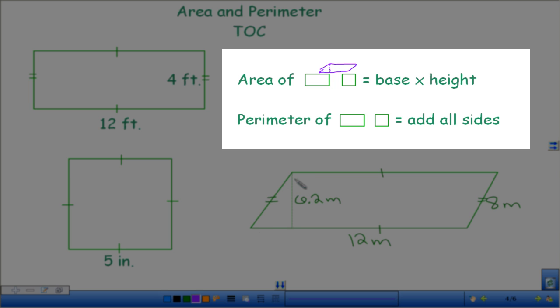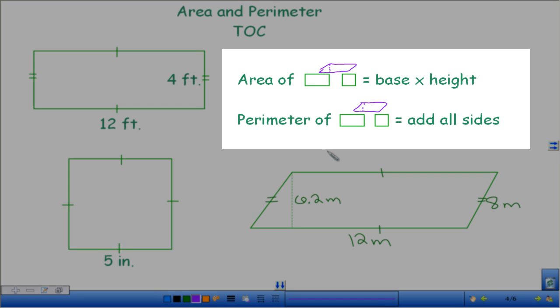The other one is over here. If this side and this side went together, or went forever in both directions, they'll never touch. So a parallelogram has two sets of parallel sides, one here and one here. The area of a parallelogram is still base times height, and the perimeter of a parallelogram is still, you're going to add all of your sides.